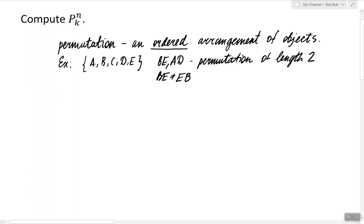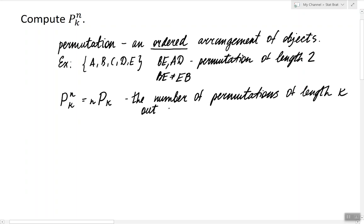Now this notation, nPk, stands for the number of permutations of length k out of n distinct objects.